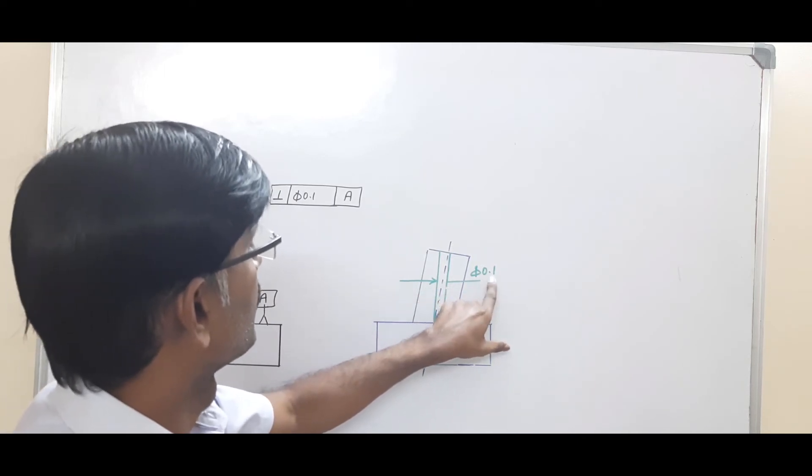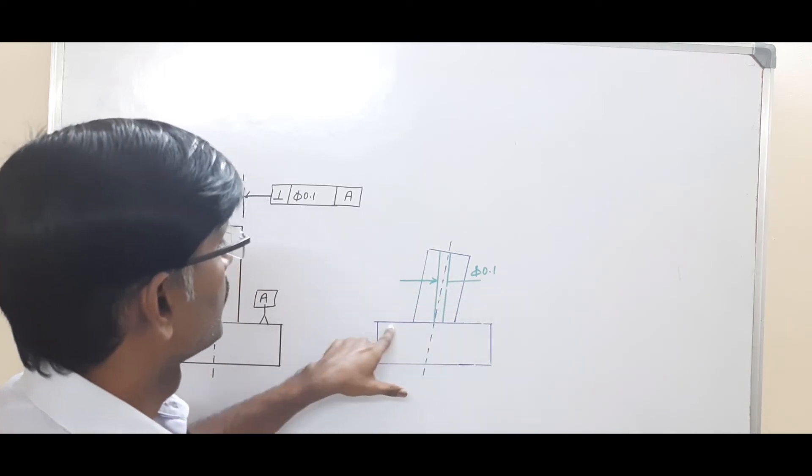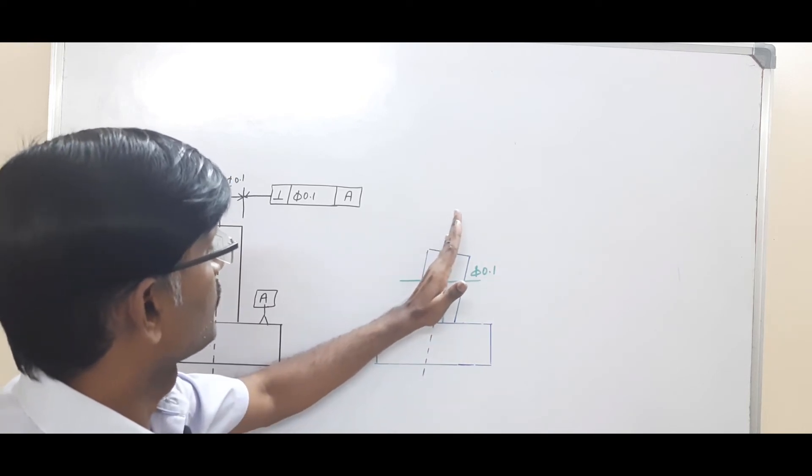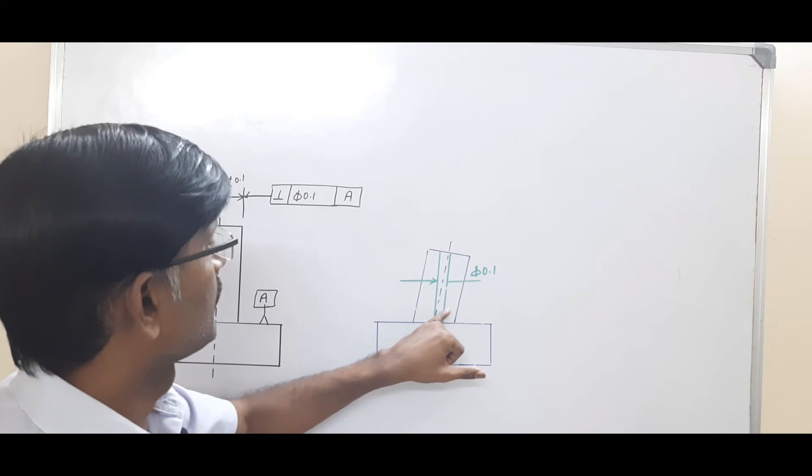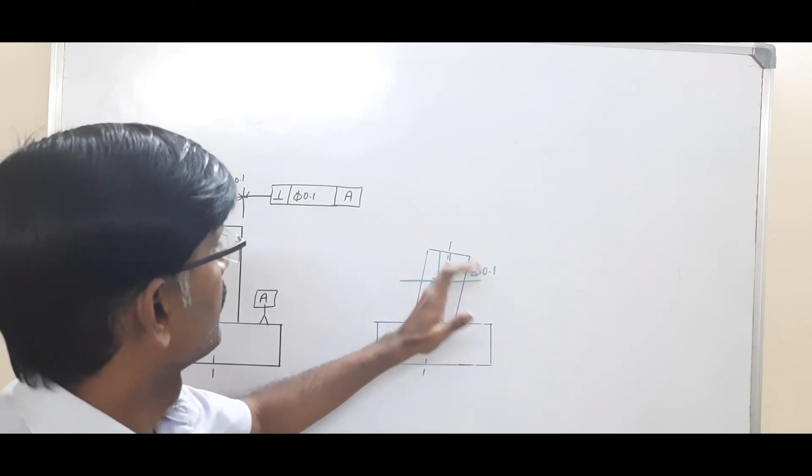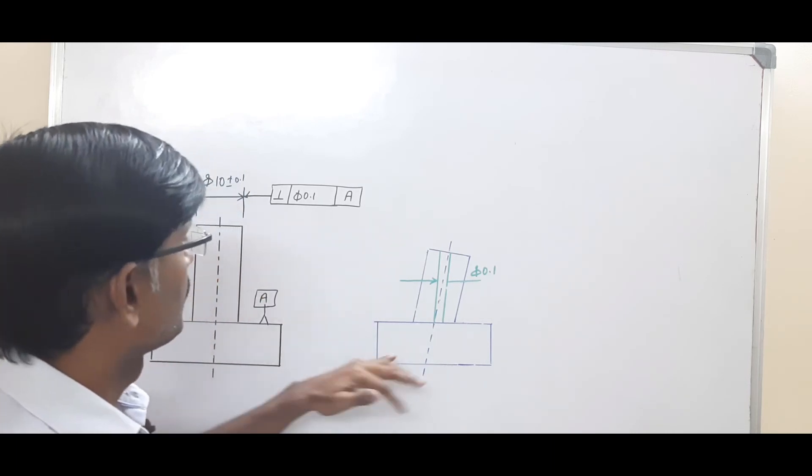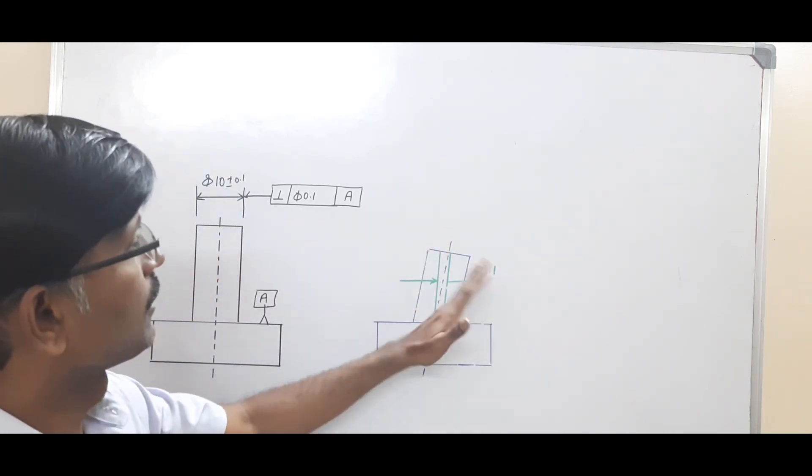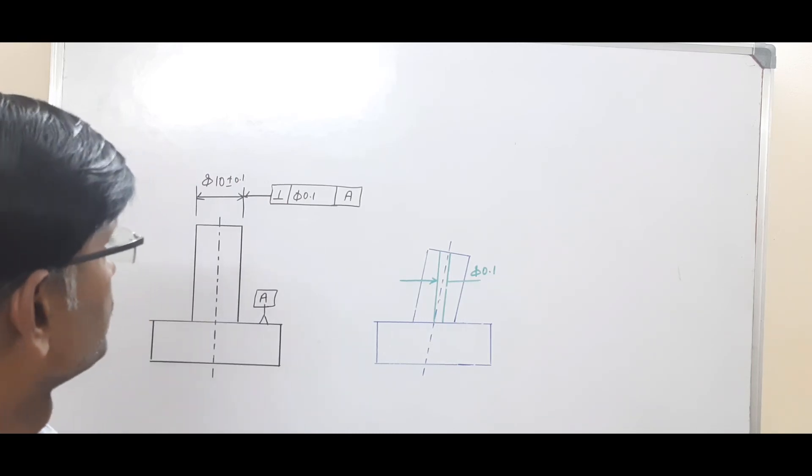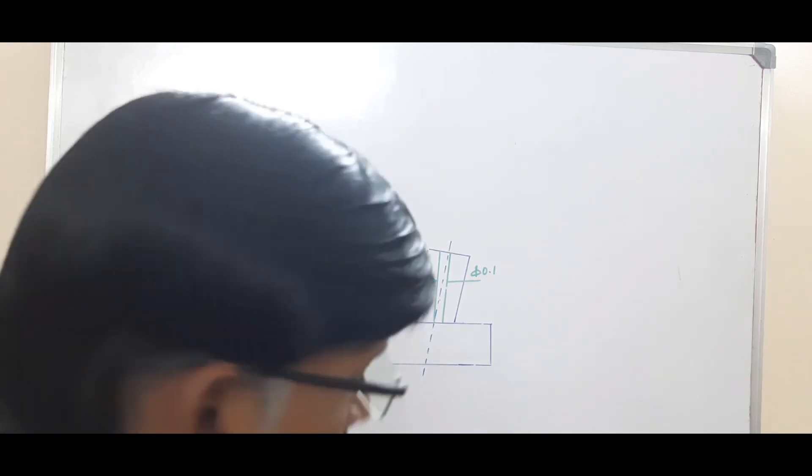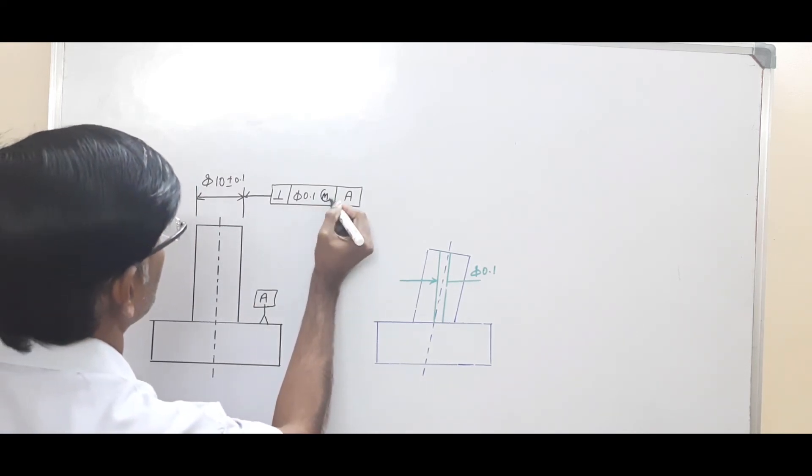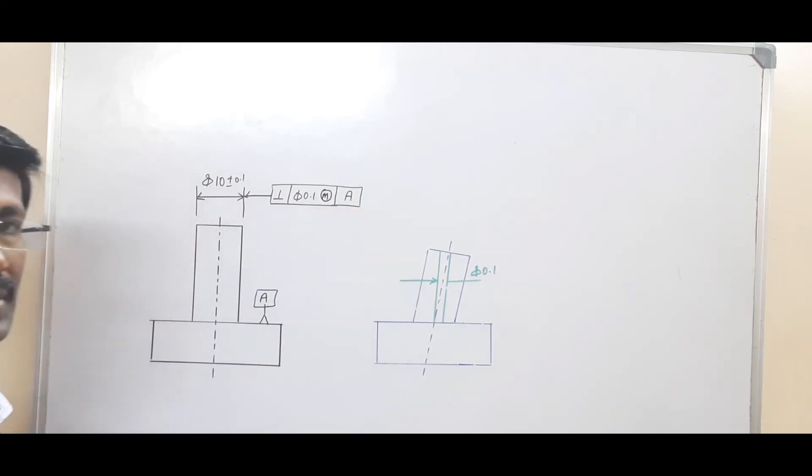The actual axis of the part must lie within the 0.1 cylinder. Then the axis is maintaining perpendicularity. If the axis is outside the cylinder, then the perpendicularity is out. Since the perpendicularity is applied to a feature of size, you can apply maximum material condition modifier and least material condition modifier.